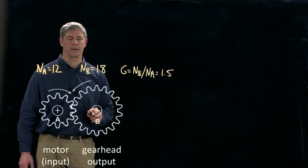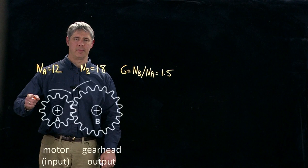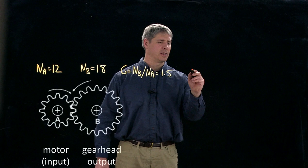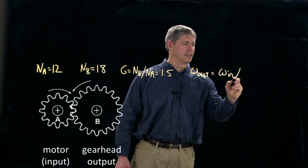So we can see that this gear spins once every time this gear spins 1.5 times. And so we can write that relationship as omega out is equal to omega in divided by G.